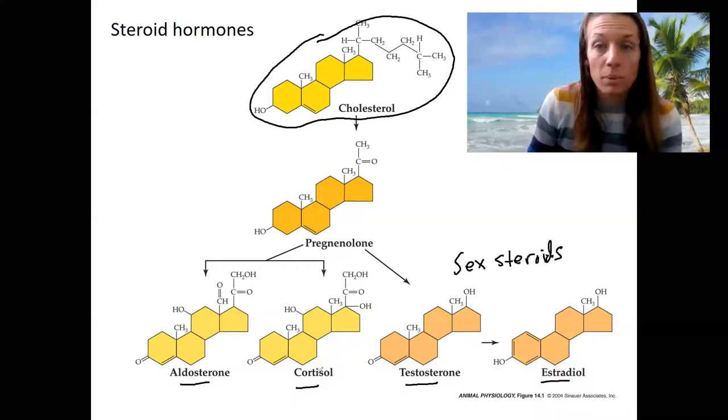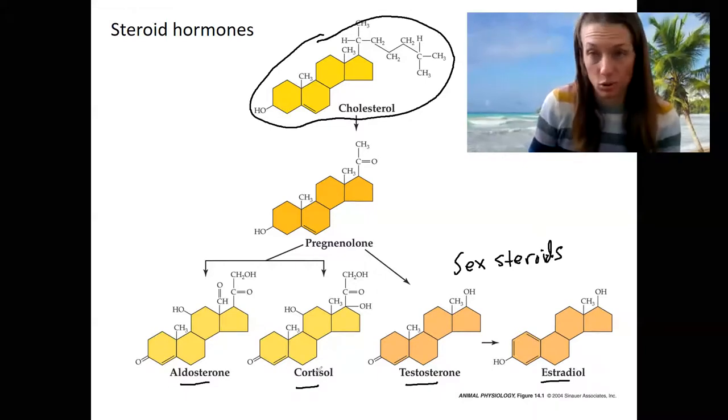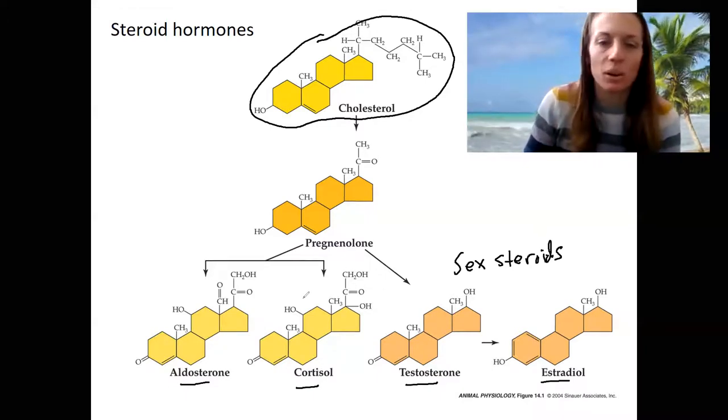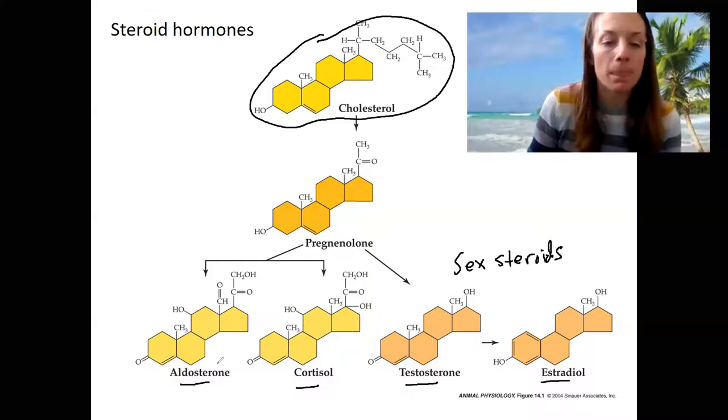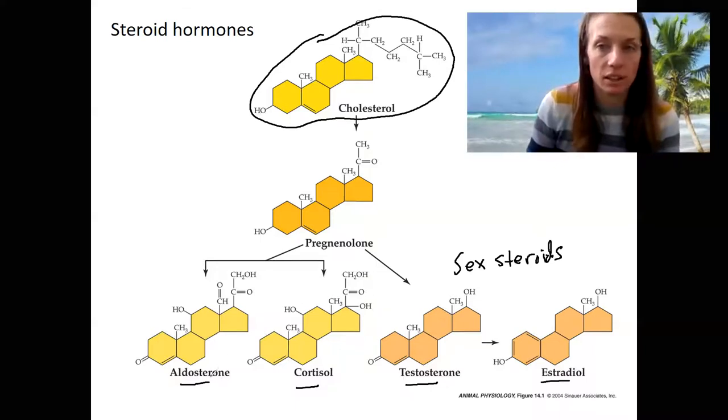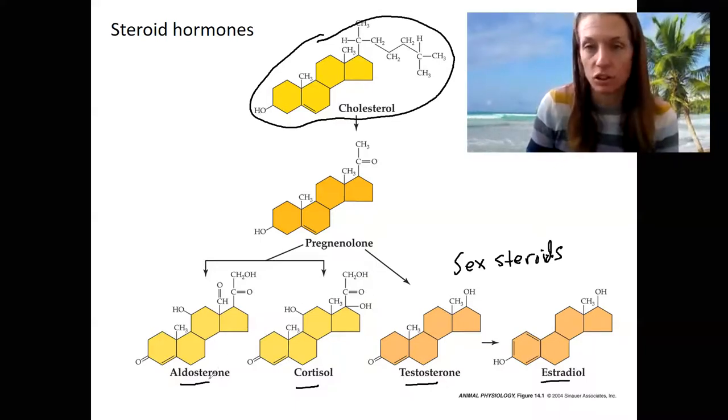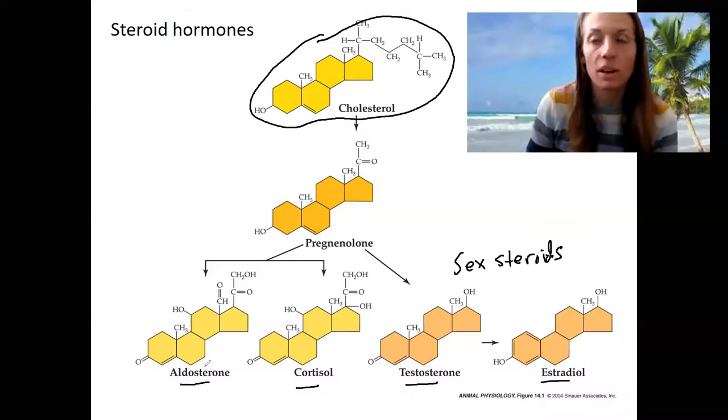Cortisol, you may have heard of. It is a stress hormone response to stress. So it's produced by your adrenal gland as well. And we'll talk about it next week. Aldosterone is involved in water retention and kidney function. So we'll see that there. It's also involved with the stress response as well.